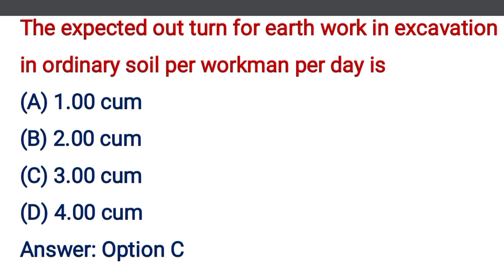The expected outturn for earthwork in excavation in ordinary soil per workman per day is — option A: 1 cubic meter, option B: 2 cubic meter, option C: 3 cubic meter, option D: 4 cubic meter. The correct answer is option C, 3 cubic meters.